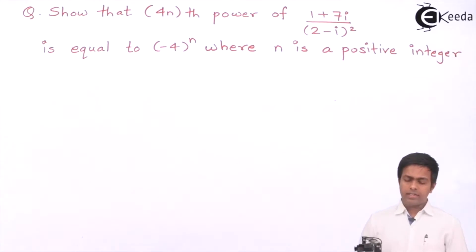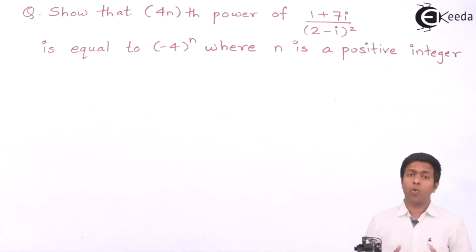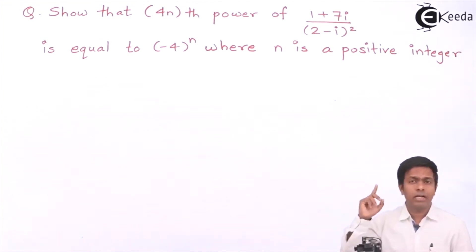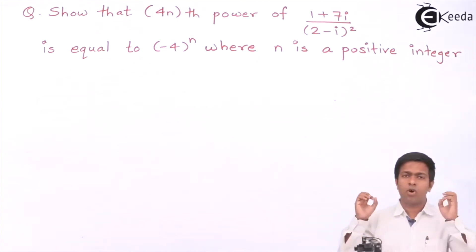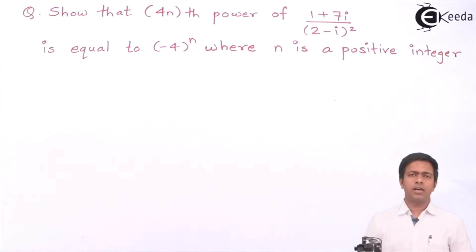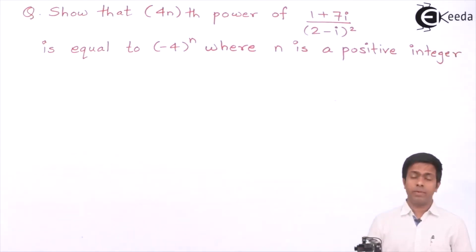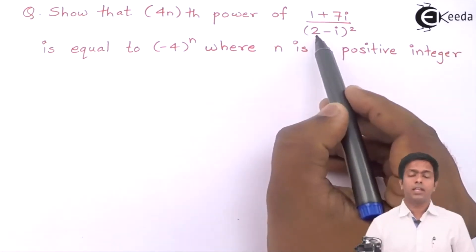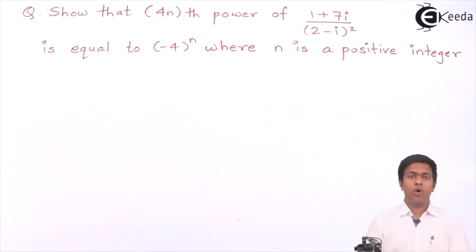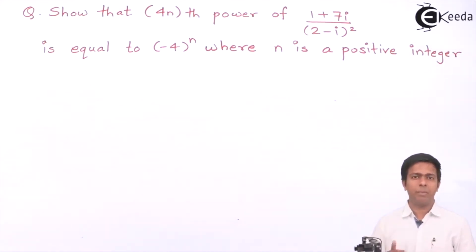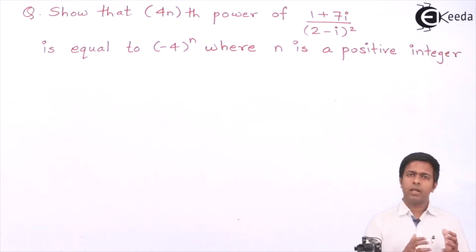The given complex number is not in standard form. Standard form means one real part and one imaginary part — x plus iy. The given number (1 + 7i) / (2 - i) squared has two real parts and two imaginary parts. To find the power using De Moivre's theorem, we must first convert it to polar form.